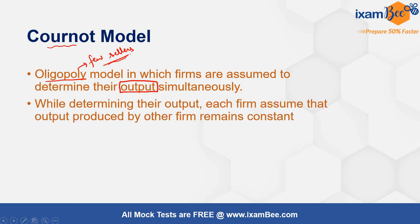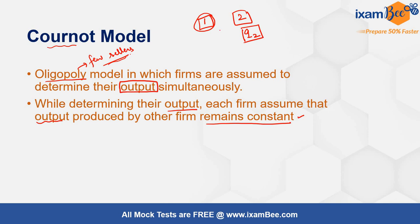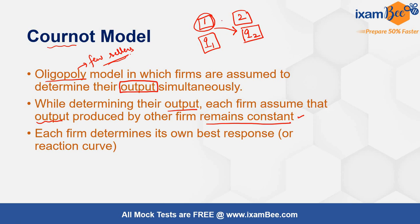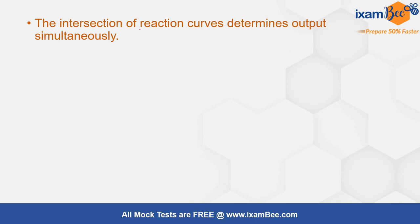While determining the output, each firm assumes that the output produced by the other firm is constant — it is not changing. So on the basis of what the other firm is producing, I will produce a certain quantity to maximize my profits. If there are two firms, firm one and firm two, firm one makes its decision keeping firm two's quantity as constant. In this fashion, each firm determines its own best response or reaction curve.